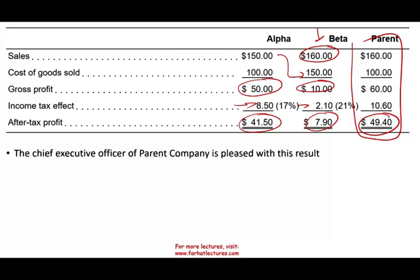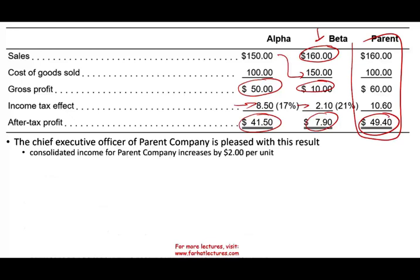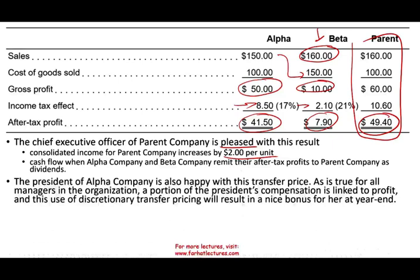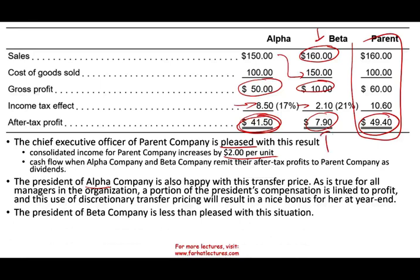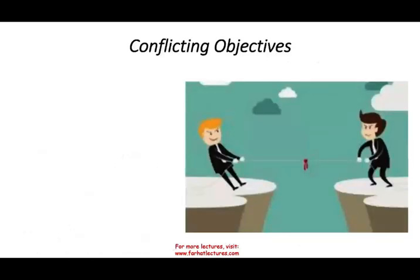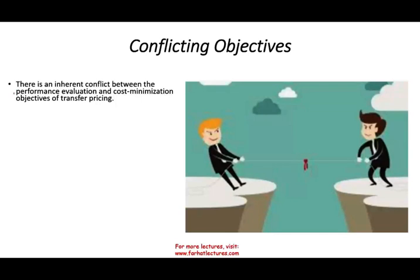What happened in this scenario? The parent overall is better off — the CEO is pleased because the consolidated net income increased by $2 per unit, and the cash flow remitted from both subsidiaries is higher. The president of Alpha is happy because their profit is higher. But Beta is going to look bad, especially if their bonus is based on profit, since their cost is artificially higher. They were forced to buy the DVD player at $150, so they lose their bonus and may lose resource allocation from the parent company because they appear unprofitable. There is an inherent conflict between performance evaluation and cost minimization objectives.